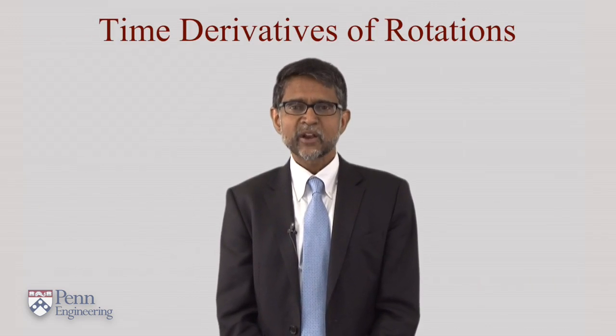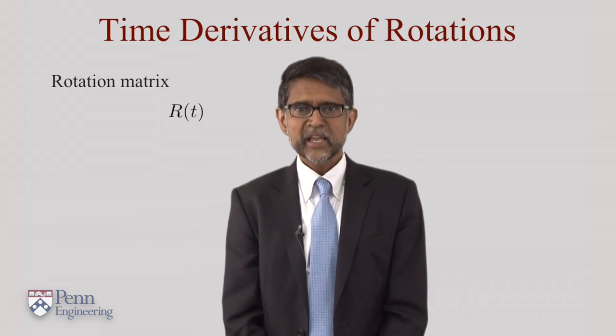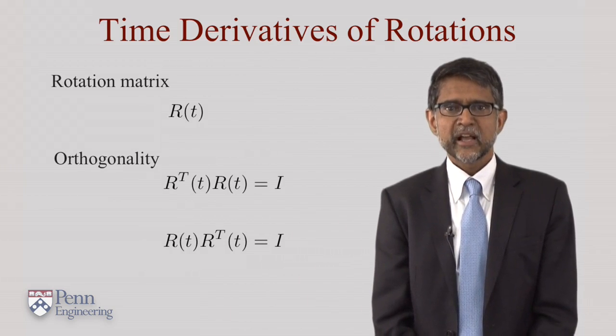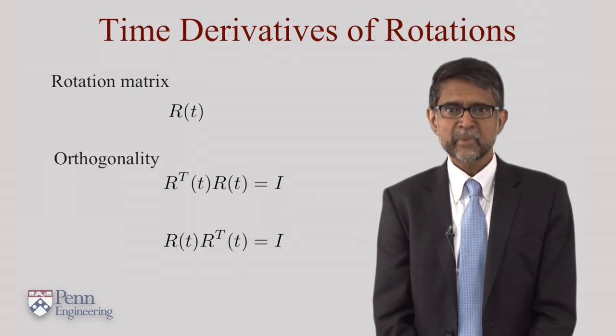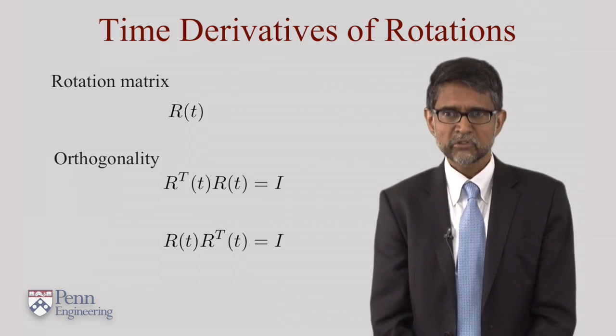We know the analog for position vectors: you differentiate a position vector and you get a velocity. Now we want to take a 3×3 rotation matrix and differentiate that. If you take this matrix and differentiate it, the first thing you want to recognize is that this matrix is not just a bunch of numbers — it's actually orthogonal.